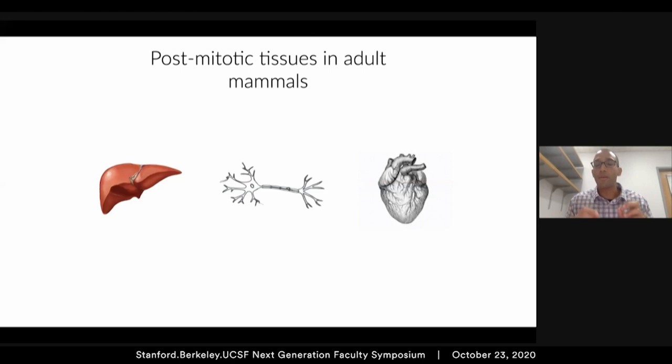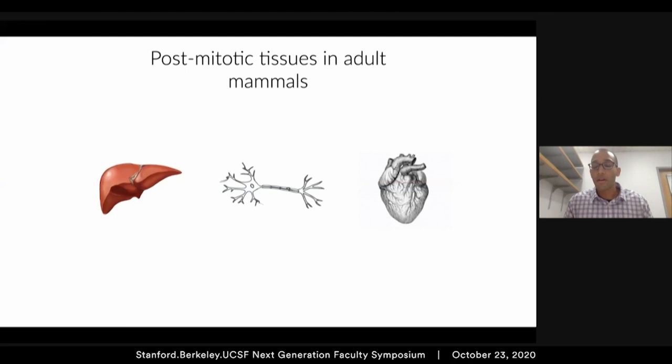As an MD-PhD, I was interested in extending our ability to carry out therapeutic genome editing in post-mitotic cells and tissues. The idea that I and others in the field came to was using cellular deaminases that directly convert one base to another and do not rely on endogenous partners, so they would be less likely to be subject to the cell-state restriction of homology-directed repair. There are cytidine deaminases that convert cytidine to uridine, and adenosine deaminases like ADAR, which convert adenosine to inosine, which is treated by the cell as guanosine.